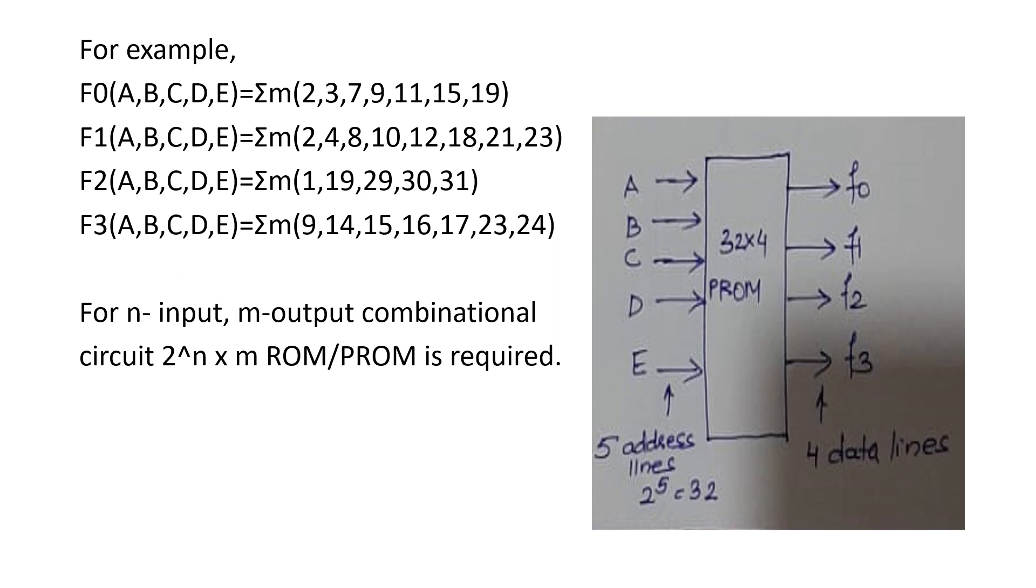Now, from here, it is very much clear that we are having five input lines. So, five inputs will be connected as address lines of the device A, B, C, D, E as you can see in this particular diagram. Whereas four outputs F0, F1, F2, F3 are connected to the data lines of the device.